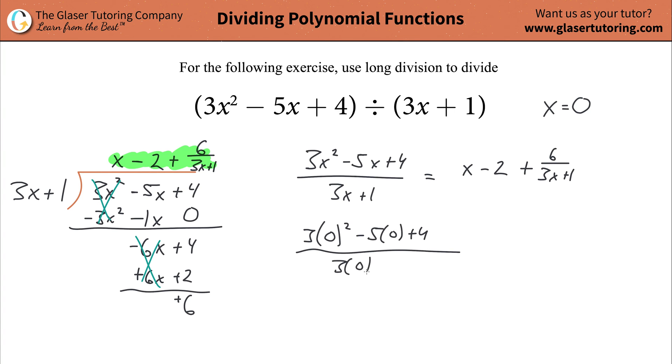So just plug it on in. Let's plug in a 0 over here. There we go. So 0 minus 2 plus then 6 over 3 times 0 plus 1. Let's start simplifying. So this just goes bye-bye. That goes bye-bye. That goes bye-bye. That's a 0, so that's just nothing. And that goes bye-bye. So what are we left with? We're left with 4 over 1.